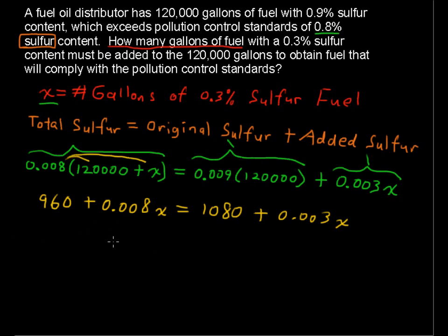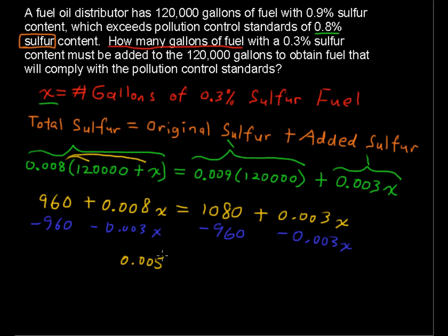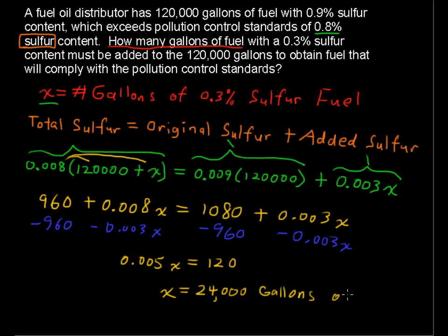Now we get all the variable terms on one side and all the constant terms on the other side. Subtract 0.003x from each side, and also subtract 960 from each side — getting variable terms on the left and constant terms on the right. We get 0.005x equals 120. Divide each side by 0.005 and x equals 24,000 gallons of the new 0.3% sulfur fuel.